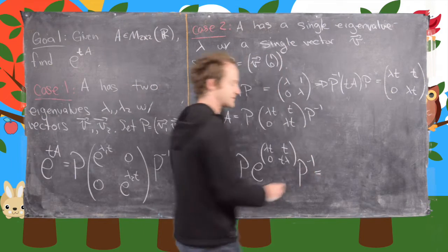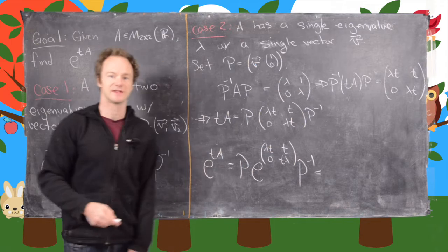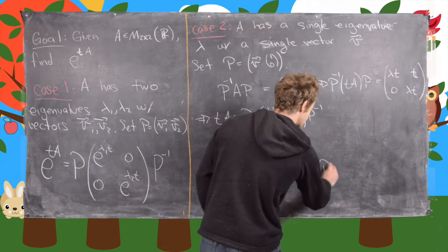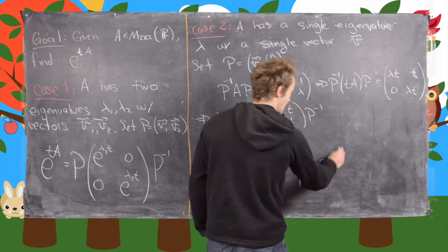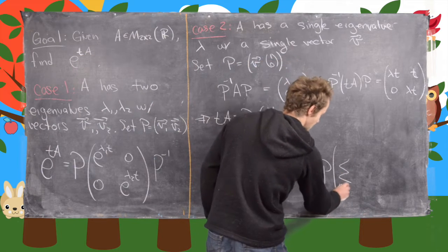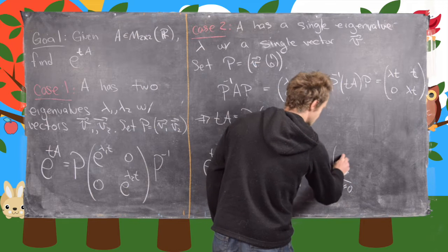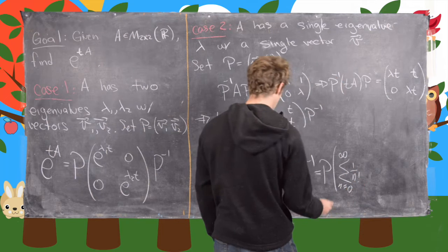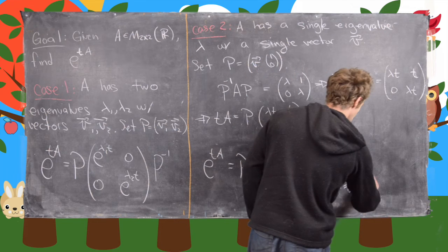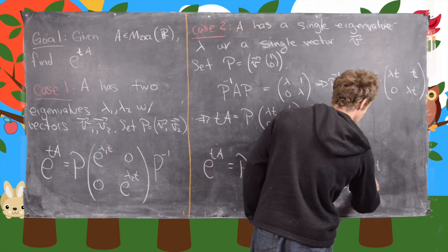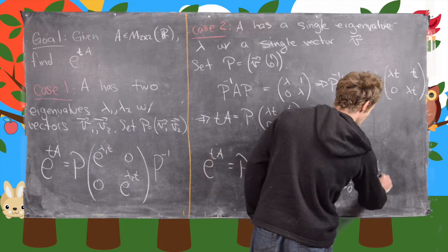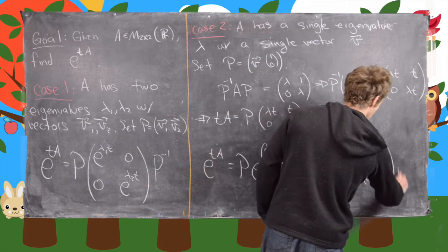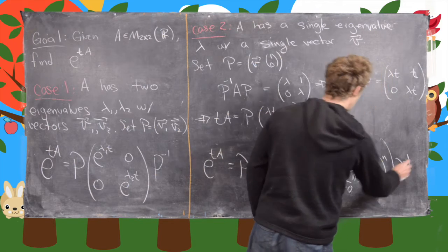How do you find a matrix exponential? You use the Taylor series for E. This is going to give us P times the sum from N equals 0 to infinity of 1 over N factorial times the matrix (lambda T, T, 0, lambda T) to the nth power, times P inverse.